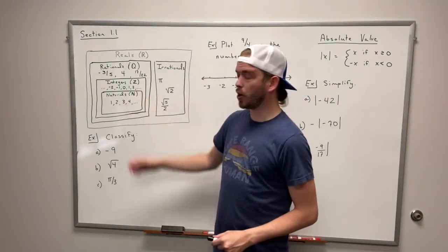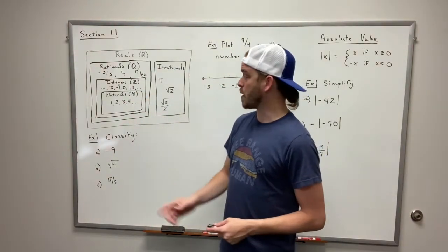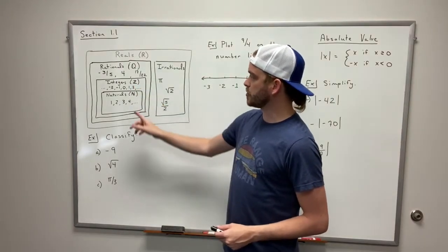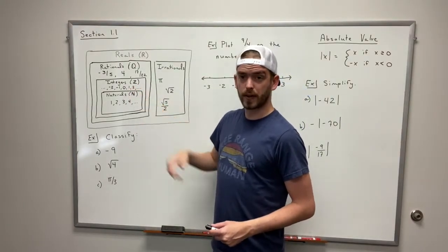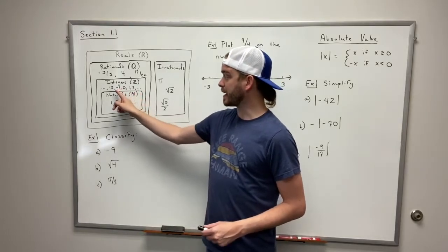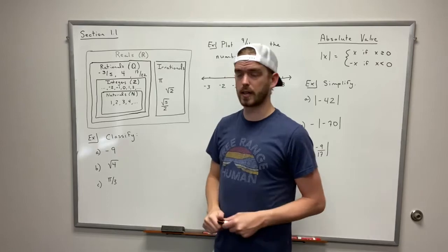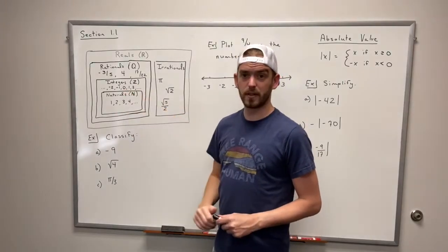Above that we have what are called the integers. Now the integers are represented by this bold-faced Z. The integers are your natural numbers, your counting numbers, their negatives so if you've got 1 you've also got negative 1 and so on for each of the natural numbers and then you also have 0.